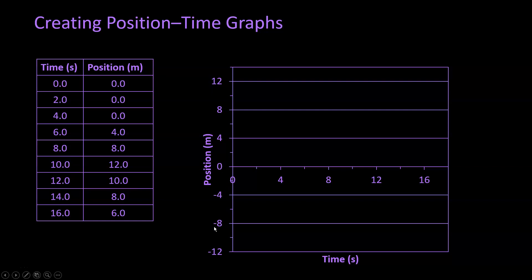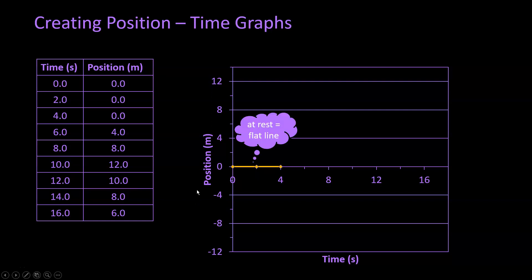So because we have negative values, our timeline is actually in the middle of the graph. We're used to seeing the x-axis down at the bottom, but here it's in the middle. Now we want to go ahead and plot our first point, and that is zero, zero. Notice for the first four seconds the object doesn't move, so our two additional points are going to be on the time axis. And we notice that when an object's at rest, we're going to get a flat line, also known as a horizontal line, on our position time graph.